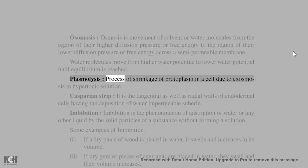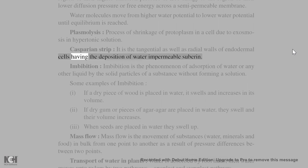Plasmolysis: process of shrinkage of protoplasm in a cell due to exosmosis in hypertonic solution. Casparian strip: it is the tangential as well as radial walls of endodermal cells having the deposition of water impermeable suberin.